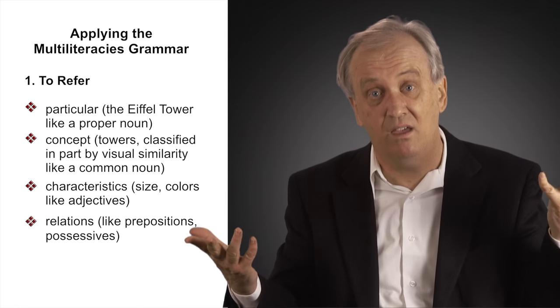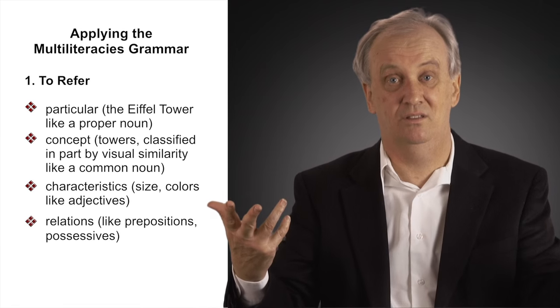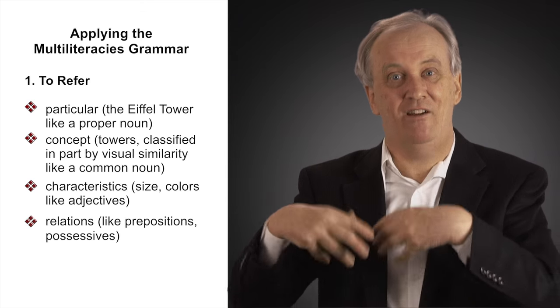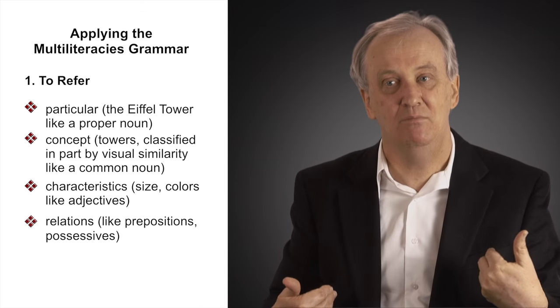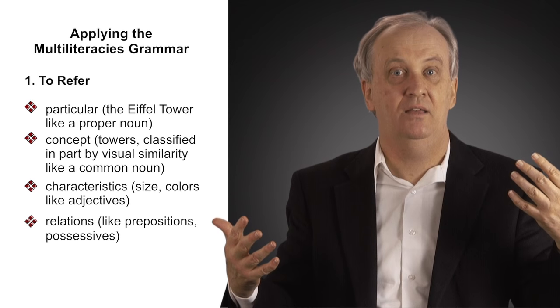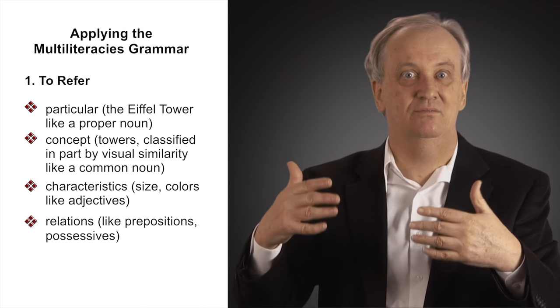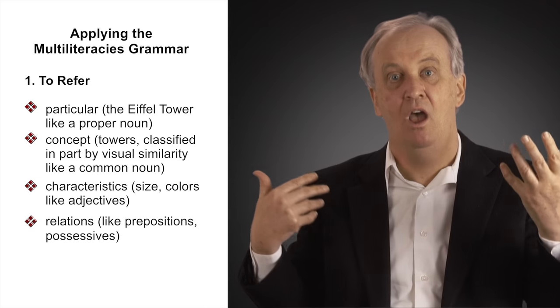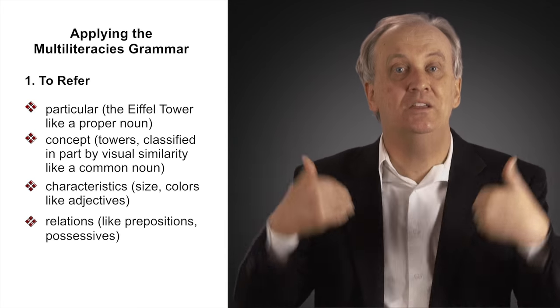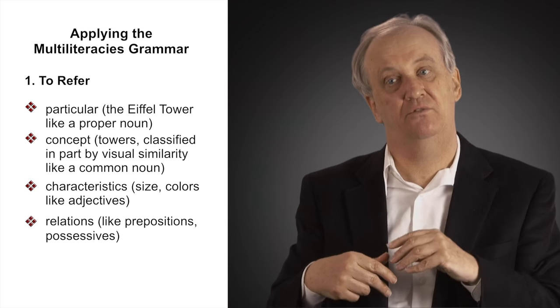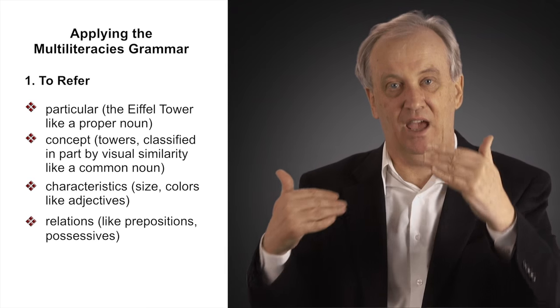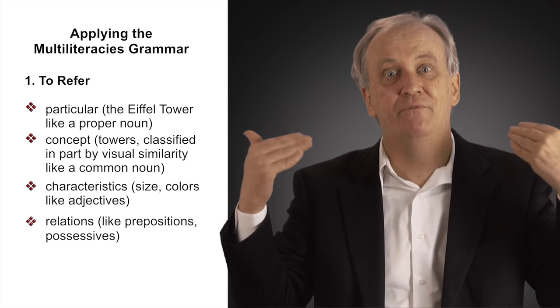But also, things have characteristics. The Eiffel Tower is grey. Grey is an adjective. The fact that the Eiffel Tower in the picture is grey and in reality is grey means that we have a set of qualities which are adjectival, and those adjectival qualities are written into the image. We also have relations which is beside the Eiffel Tower is a tree, and the Eiffel Tower has three levels. Possessives, things like prepositions, things like possessives. All of those relations in the world that appear in language are also constructed in images.